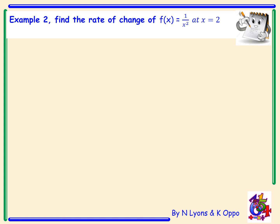Example 2. Find the rate of change of f(x) = 1/x² at x = 2. First, f(x) needs to be rewritten with x removed from the denominator of the fraction, so x to the power of negative 2. Differentiating, we get an answer of −2x to the power of −3. It's important this is now rewritten with a positive index, giving −2/x³.